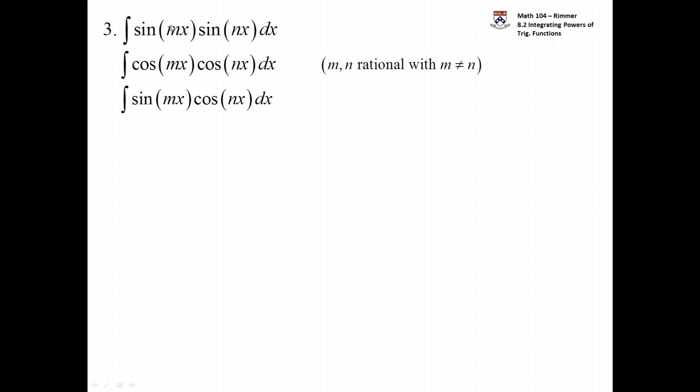And so finally, then sine and cosine mixed together with different multiples in there. Because if they were the same multiple, then we would just call it sine squared and integrated. And so that's why we're forcing these things to be different. Then we're going to need some other kind of trig identity to help us out.